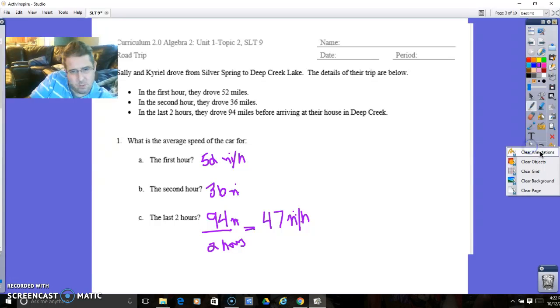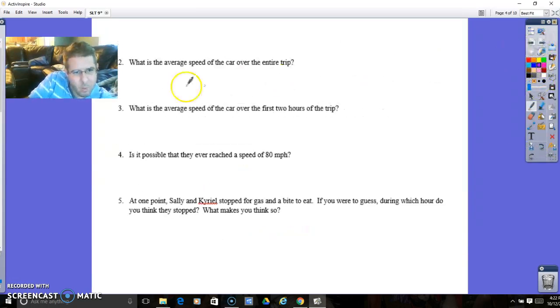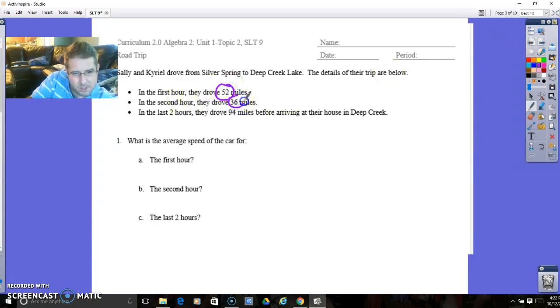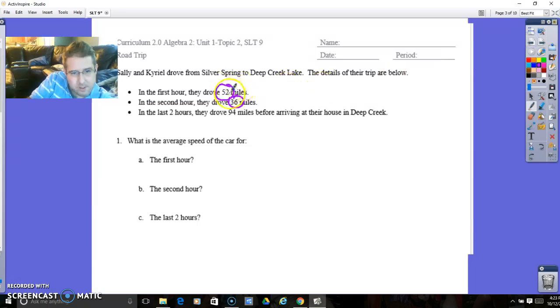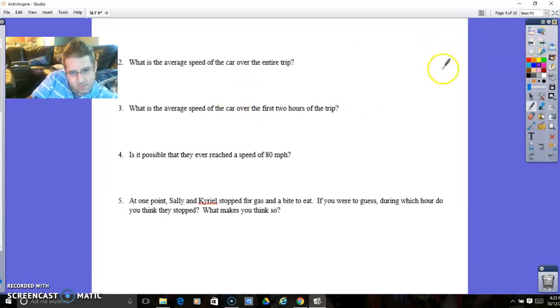What is the average rate of the car over the entire trip? All you need to do is add up 52 plus 36 plus 94, add those three numbers up and divide by four hours. That will give you the total average speed. What is the average speed over the first two hours? You do 52 plus 36, which gives you 88, and divide that by two hours. That's an average of 44 miles per hour.